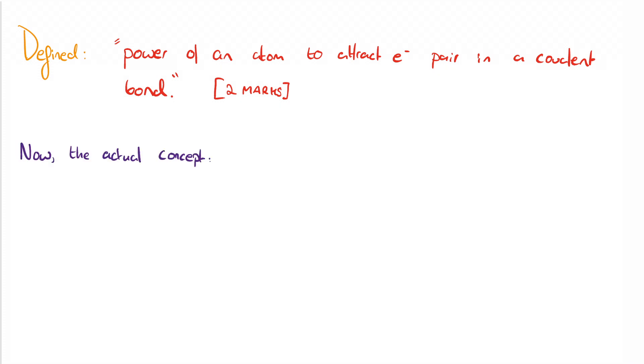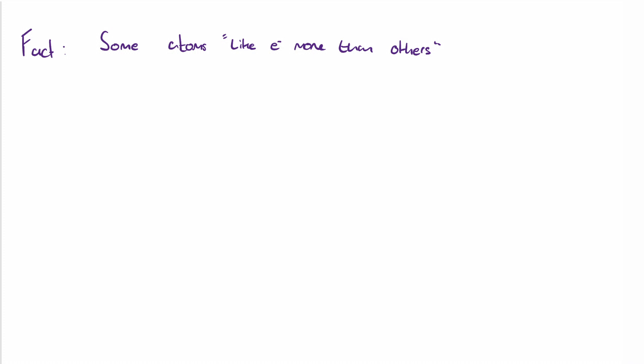But you do also need to understand that to a certain extent. I think that definition's completely useless by itself. So we're gonna deal with some understanding now. All right, so what you need to realize is that different atoms like electrons, so to speak, more than others. Electrons are more attracted to some atoms than others. This is down to a number of factors.